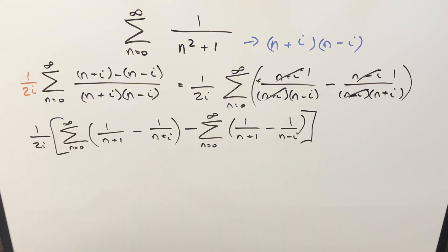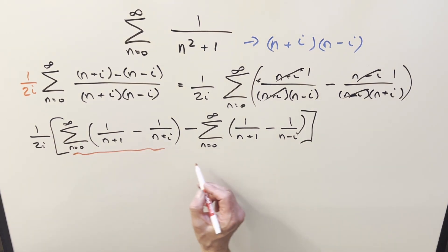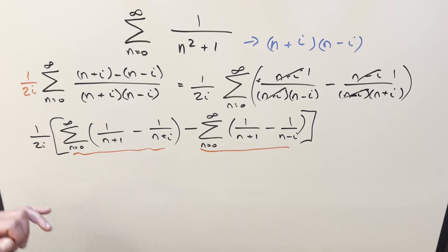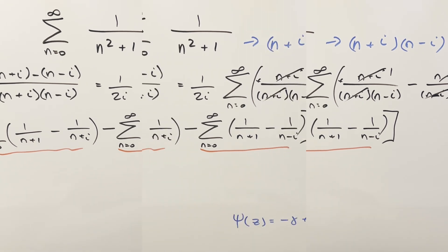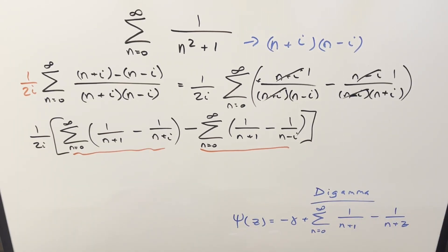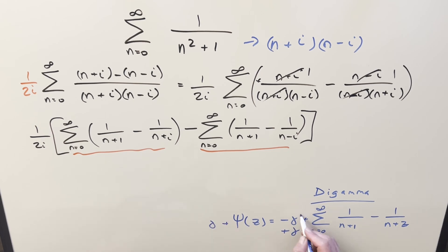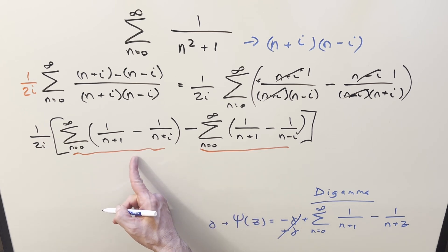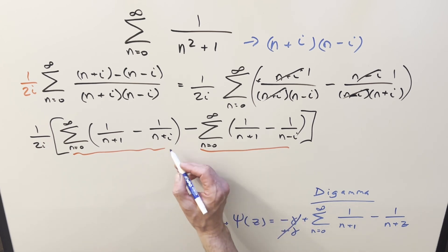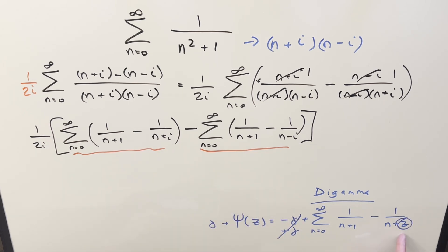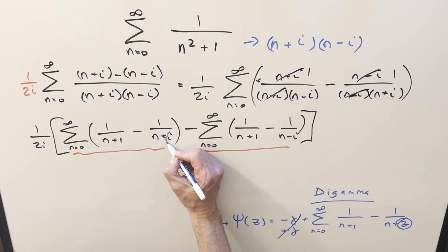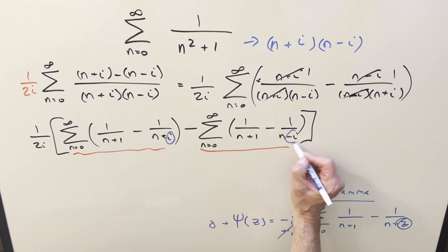At this point, we've got two sums that are in the same form. The reason for doing this is I want to use the digamma function on it. We'll use the series definition of the digamma function. I just want to rearrange it a little bit — we have here the Euler–Mascheroni constant. If I add that on both sides of the equation, this will cancel, and now we have a way to represent each of these series, where the z value is going to be the input on the digamma function.